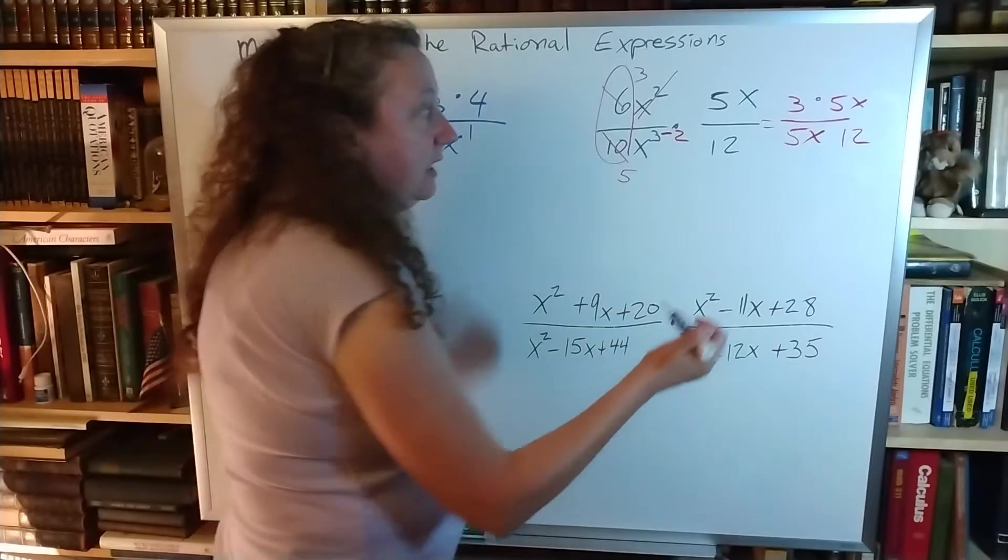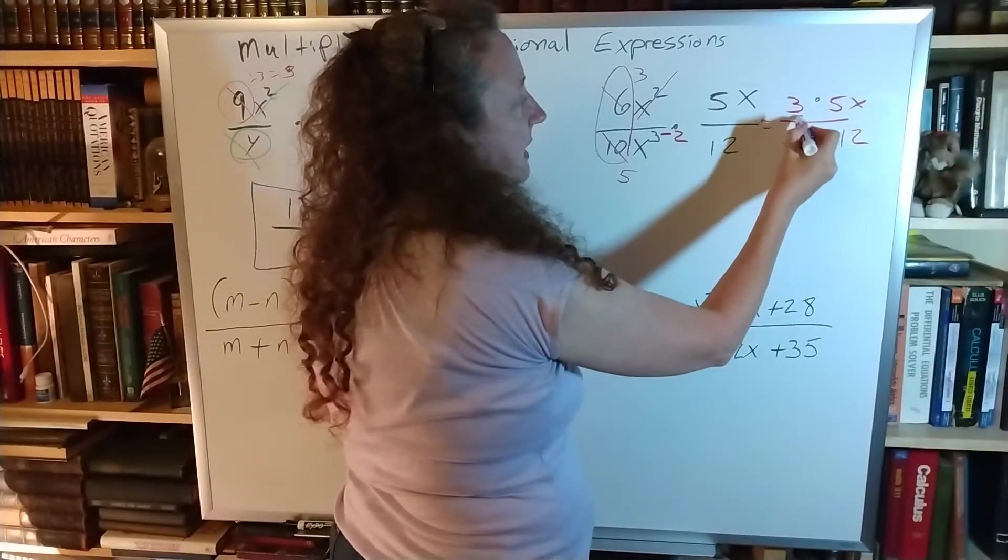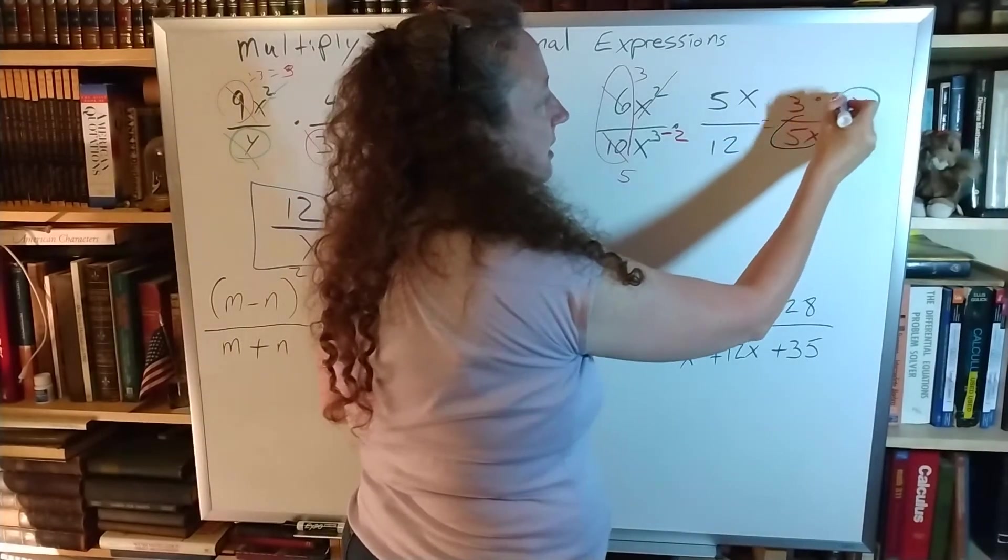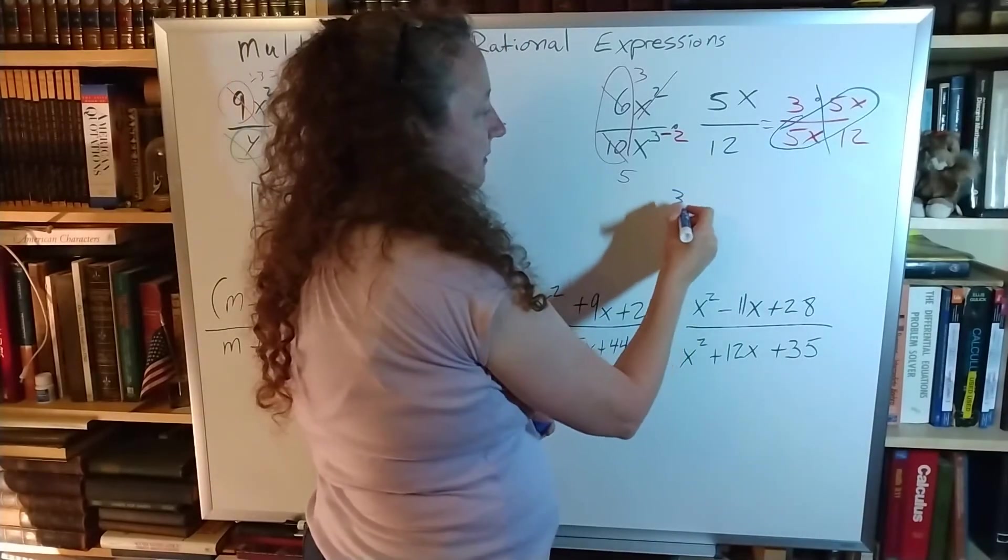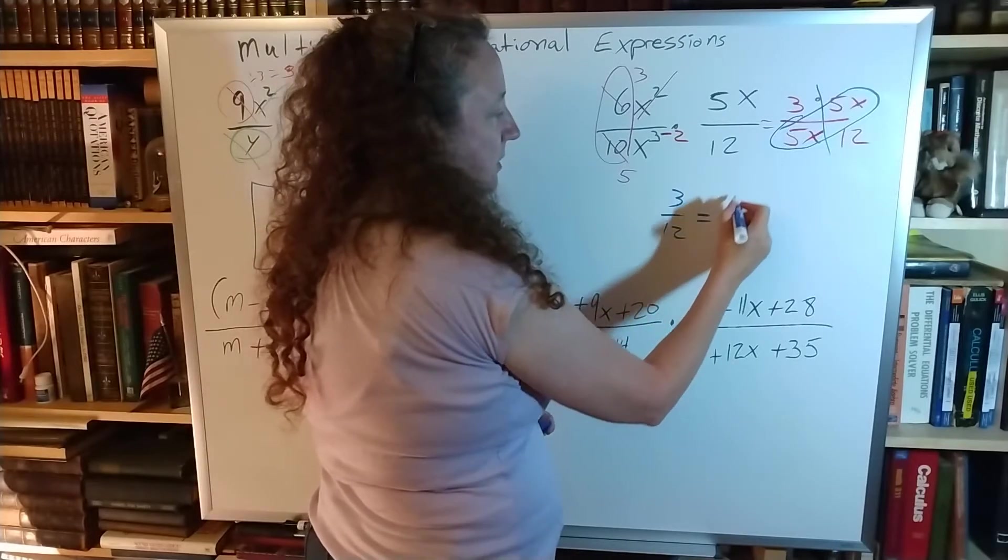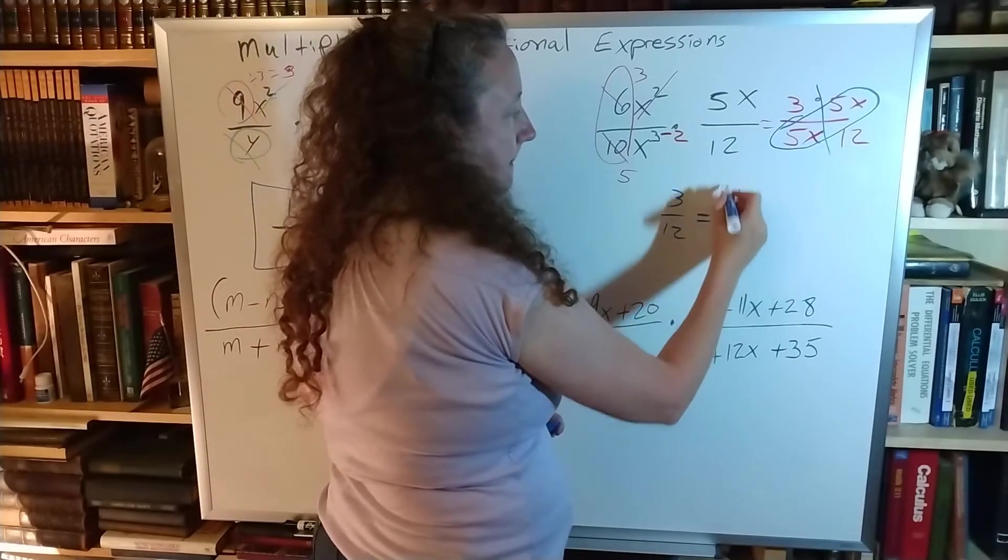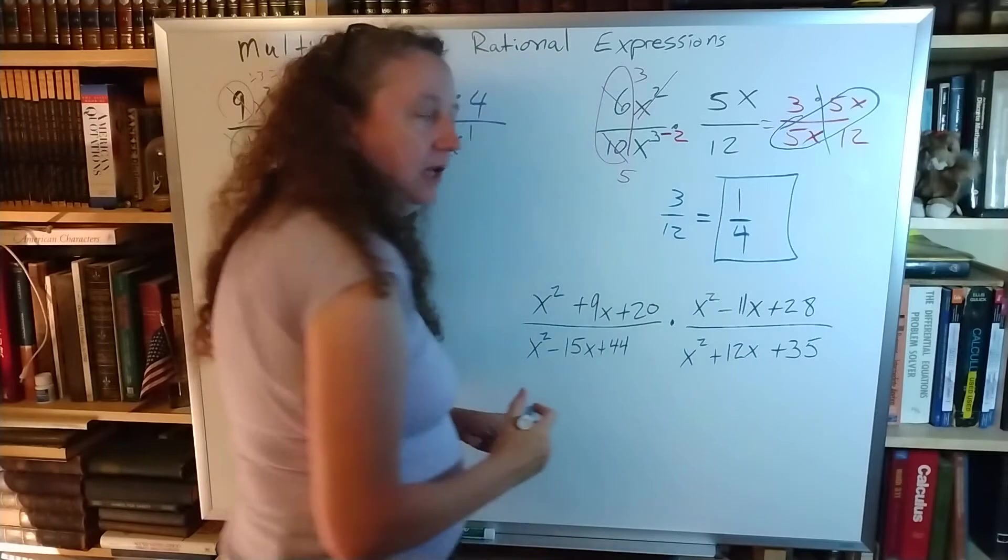So now that I'm looking at that, I see the 5x here and there cancel each other out. So I have 3 over 12, which is the same as 1 over 4. And there's my answer.